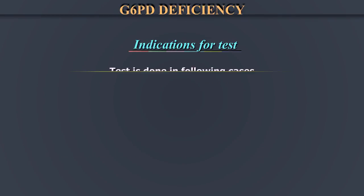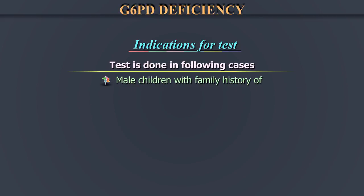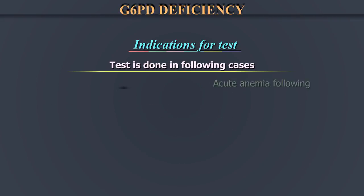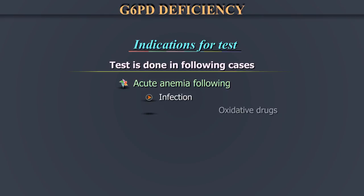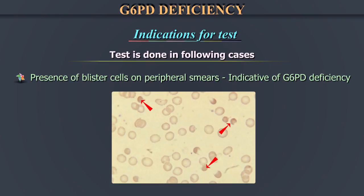Who should be tested? This being a congenital hemolytic anemia, test in the following cases: newborns with congenital hyperbilirubinemia; children, especially male children, with a family history of jaundice, anemia, splenomegaly, or cholelithiasis; adults or children with acute anemia following infection, oxidative drugs, or ingestion of fava beans. Presence of blister cells on peripheral smears may be indicative of G6PD deficiency and therefore warrant testing.